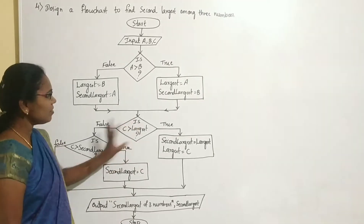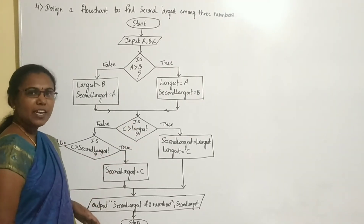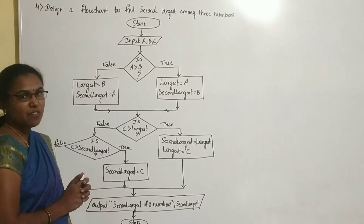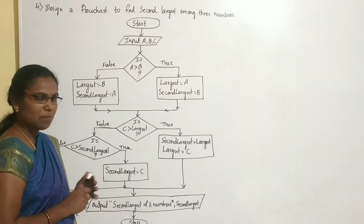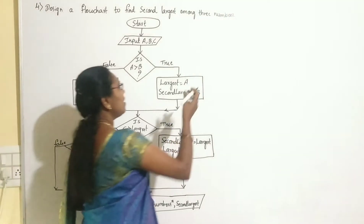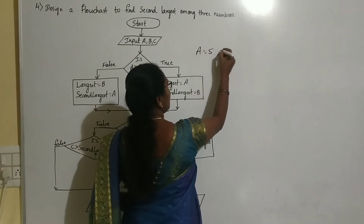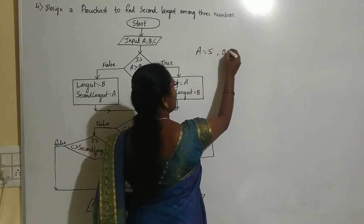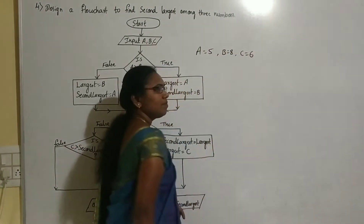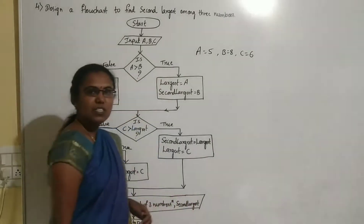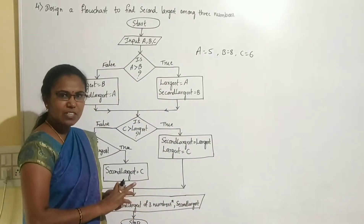This is the flowchart for the problem. Now I will explain how this flowchart works with one example. I will take A = 5, B = 8, and C = 6 — three different values stored in input variables A, B, and C respectively.